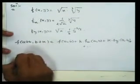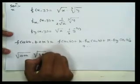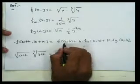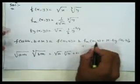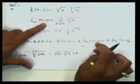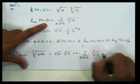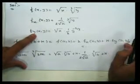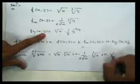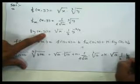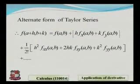So f(a+h, b+k) = √(a+h) · (b+k)^(1/3) = √a · b^(1/3) + h·fx(a,b) + k·fy(a,b). Here fx(a,b) = 1/(2√a) · b^(1/3) by replacing x=a, y=b. And fy(a,b) = √a · (1/3)·b^(−2/3).